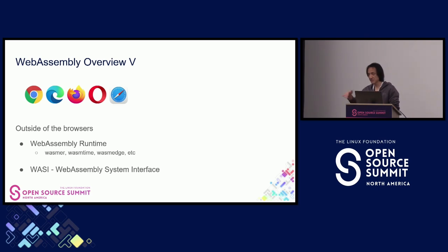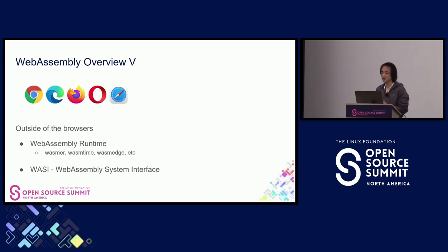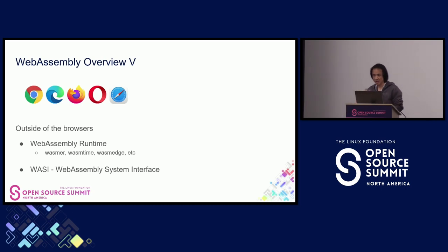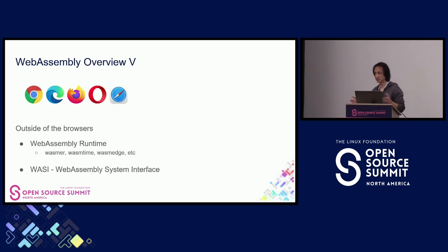WASI stands for WebAssembly System Interface. Just as WebAssembly is a simple language for a conceptual machine, it needs a system interface for a conceptual operating system — not any single operating system — so it can run on different OSes. WASI is an API specification that defines the system interface between a WebAssembly module and its host environment. Outside the web browser, we use WASI so the same WebAssembly module can run on different WebAssembly platforms.